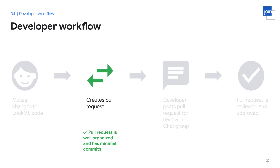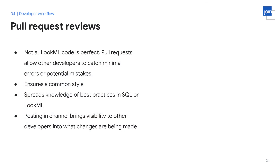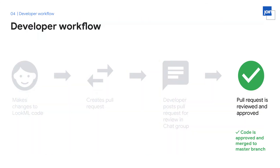Once the developer ensures that their code meets the developer guidelines, they can open a pull request using their Git provider. Once the pull request is created, the user can post a link with the pull request, the purpose, the complexity, and the time estimate for review so that other developers can review. We have a chat channel internally that includes all ambassadors and the centralized data team. Pull requests give other users the opportunity to review each other's code and learn from one another. Having someone else review ensures a common style and allows developers to spread knowledge of best practices in SQL or LookML. Once another developer approves a pull request, the code is then merged to the master branch.